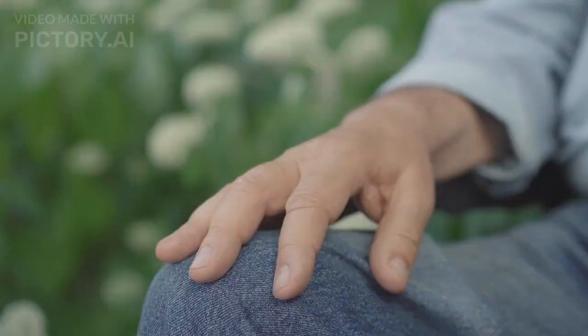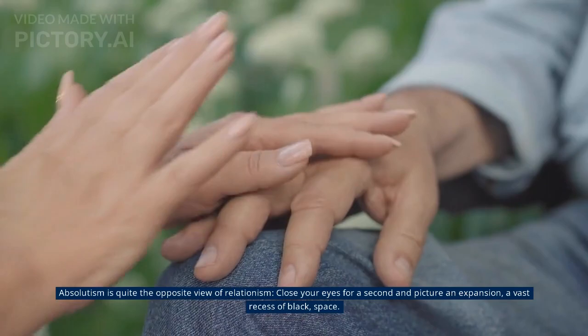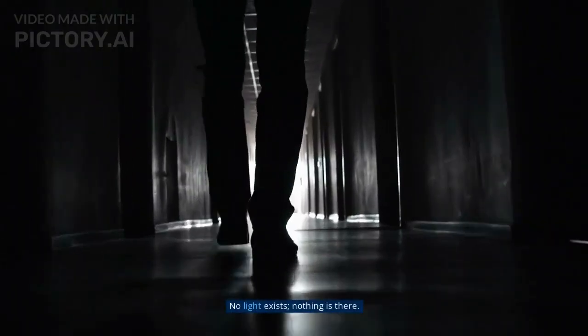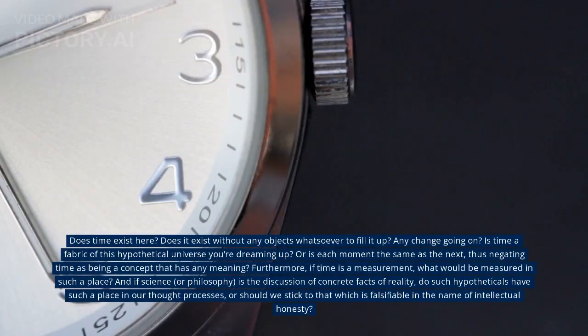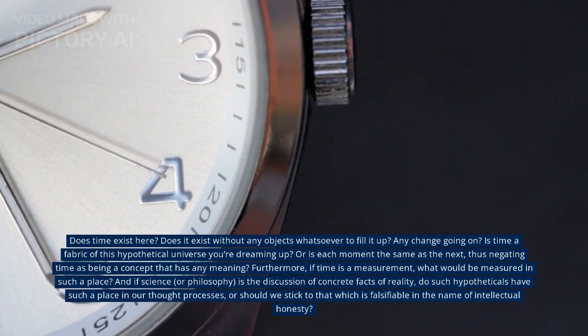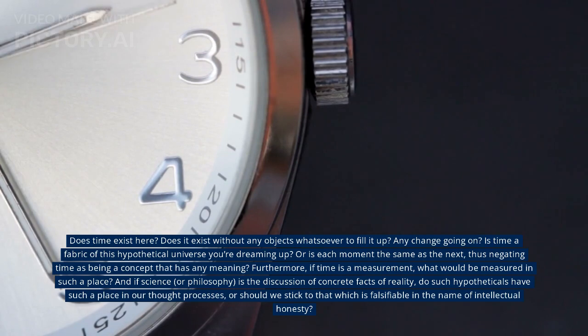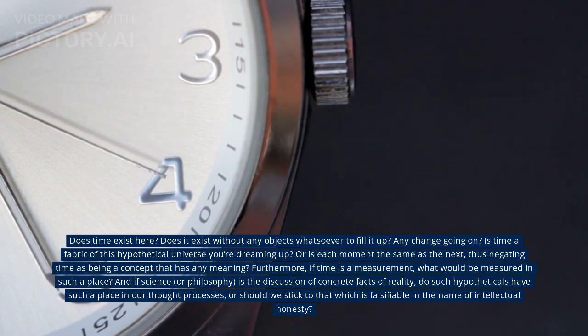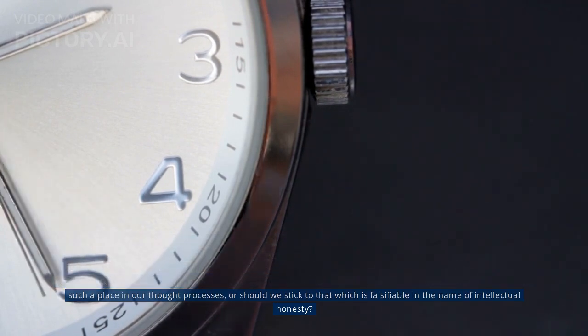Number 6: Absolutism. Absolutism is quite the opposite view of relationism. Close your eyes for a second and picture an expansion, a vast recess of black space. No light exists, nothing is there. It's just a massive empty void of sweet, beautiful nothingness. Does time exist here? Does it exist without any objects whatsoever to fill it up? Any change going on? Is time a fabric of this hypothetical universe you're dreaming up? Or is each moment the same as the next, thus negating time as being a concept that has any meaning? Furthermore, if time is a measurement, what would be measured in such a place? And if science or philosophy is the discussion of concrete facts of reality, do such hypotheticals have such a place in our thought processes, or should we stick to that which is falsifiable in the name of intellectual honesty?